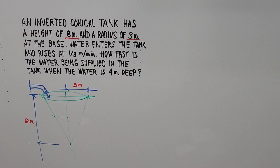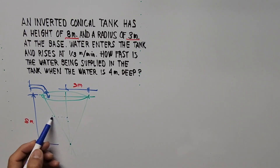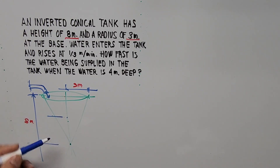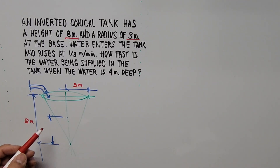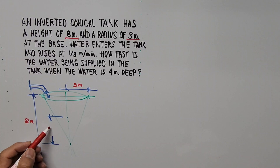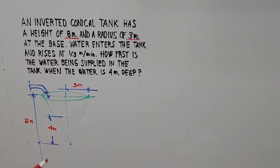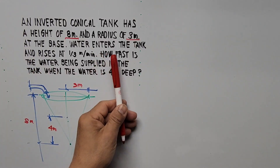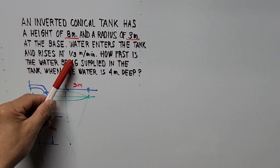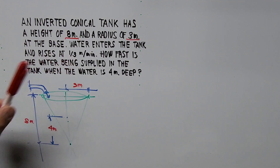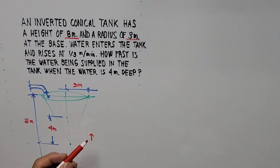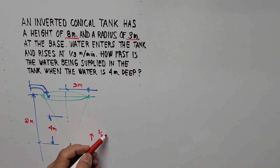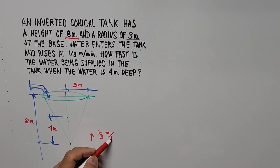We can extend that to indicate the height of the water in the tank — that's 4 meters. The water enters the tank and rises at one-third meter per minute, so the water is rising at the rate of one-third meter per minute.